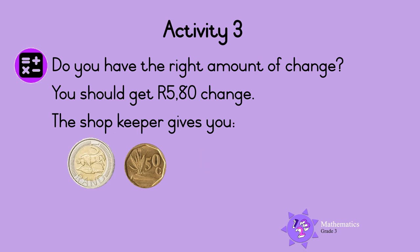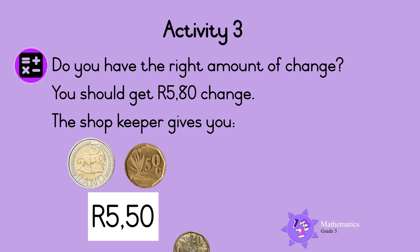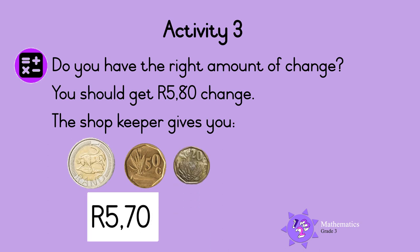What about this one? Now, you should get 5 Rand and 80 Cents change. The shopkeeper gives you 5 Rand and 50 Cents change. The shopkeeper still needs to give you 30 Cents. So, he should give you a 20 Cents coin and a 10 Cents coin. That's it! Now you have the correct amount of change.